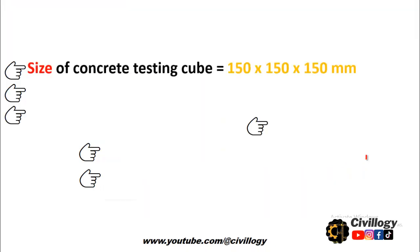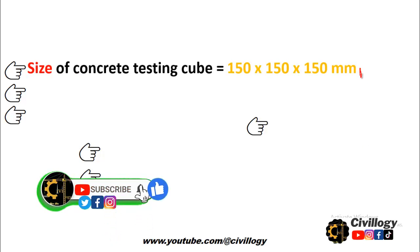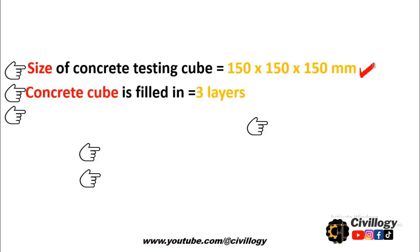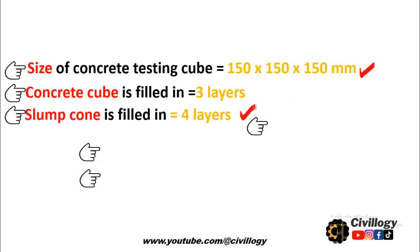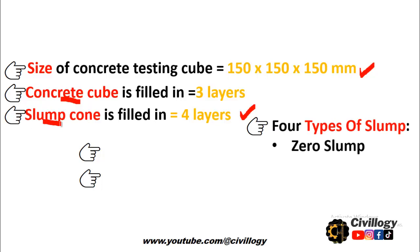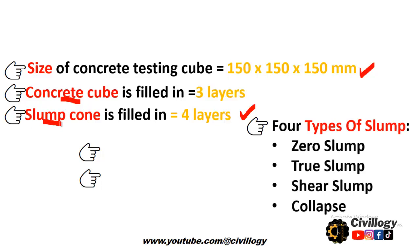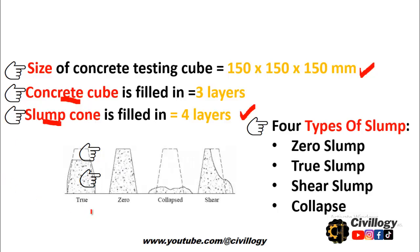The size of the concrete testing cube is 150 × 150 × 150 mm - this is the standard size used for checking the compressive strength of concrete. The concrete cube is filled in three layers, while the slump cone is filled in four layers - don't confuse these two. There are basically four types of slump: zero slump, true slump, shear slump, and collapse. Zero slump shows no change in shape; if it collapses it is called collapsed slump; and if a side of the cone slides away, it is called shear slump.